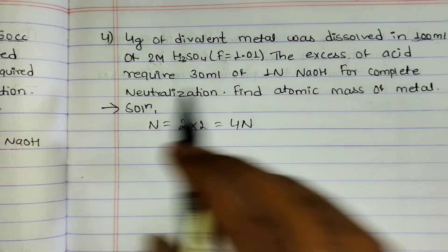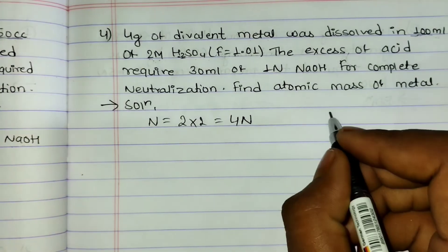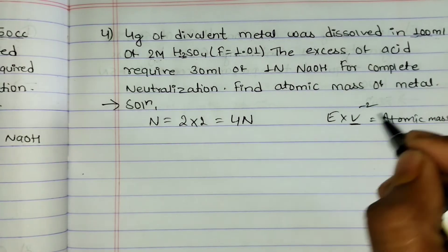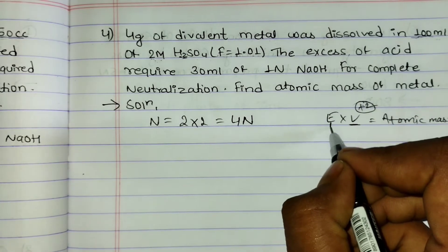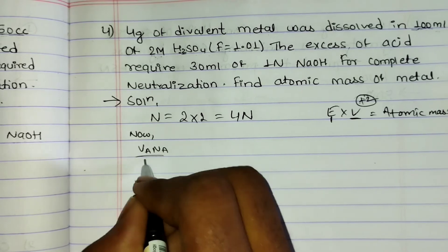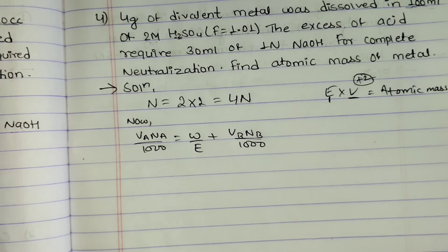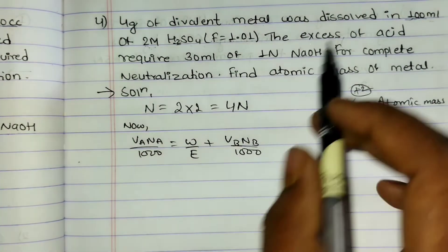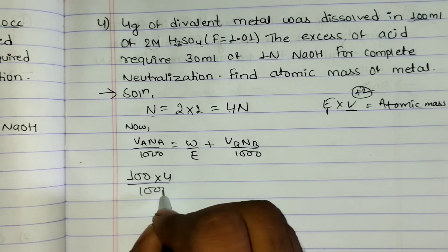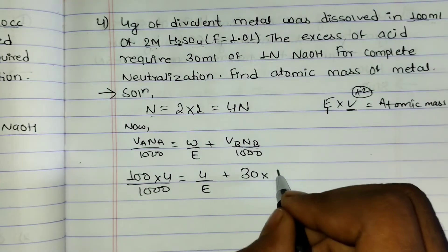Atomic mass = equivalent weight × valence. Using formula V_a × N_a / 1000 = W / E + (V_b × N_b) / 1000: 100 × 4 / 1000 = W / E + 30 × 1 / 1000. Solving: 0.4 = W/E + 0.03, so W/E = 0.37.